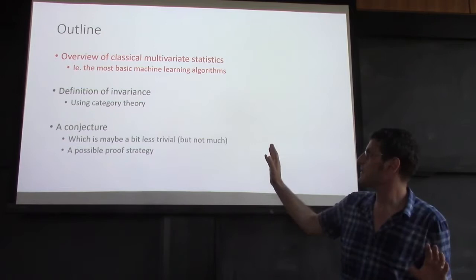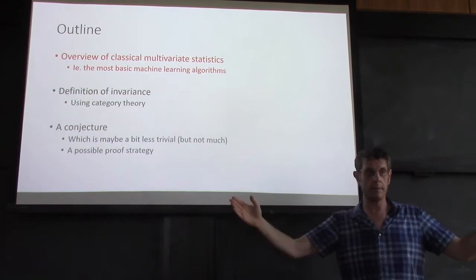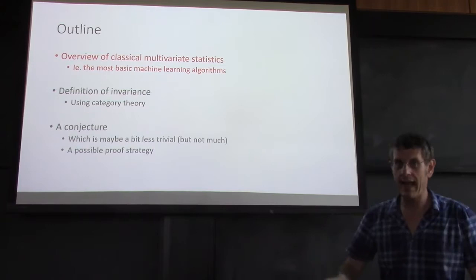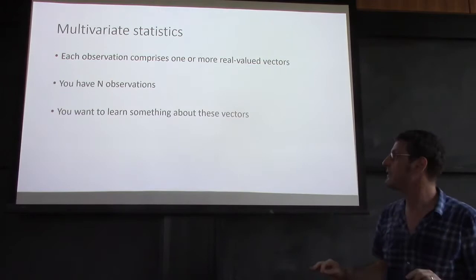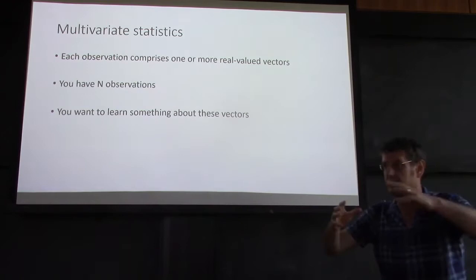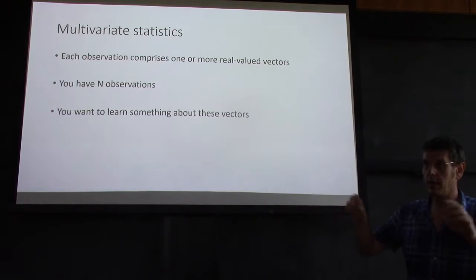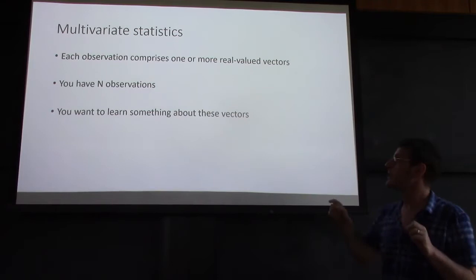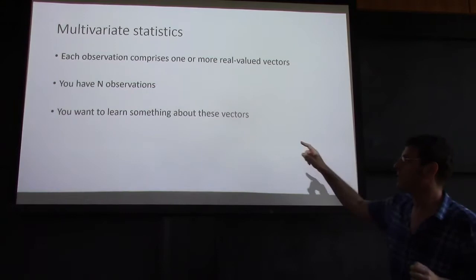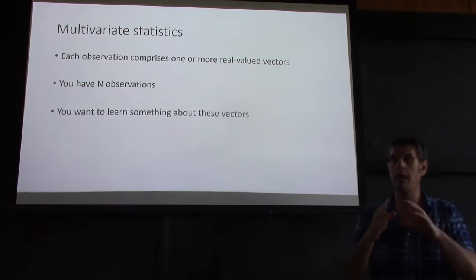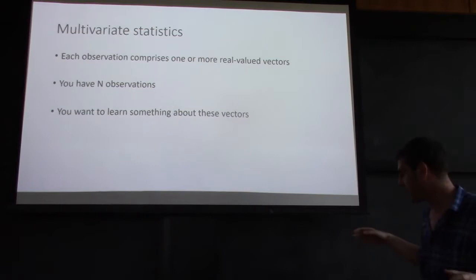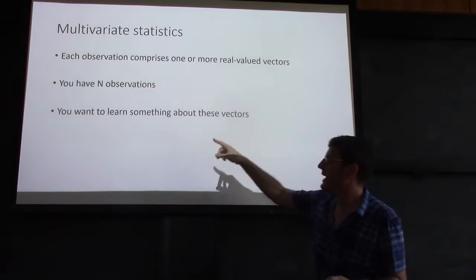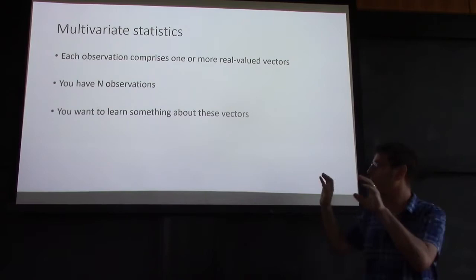In multivariate statistics, you deal with a set of observations and you want to learn something about them. You have n observations; each one comprises one or more real-valued vectors — just a collection of numbers. So you make these observations n times, and each time you observe p real numbers which you put together into a vector, and you might observe another set of q real-valued numbers put together into another vector. Each observation consists of the same number of vectors with the same dimension, and you want to learn something about these vectors.